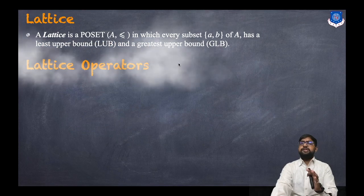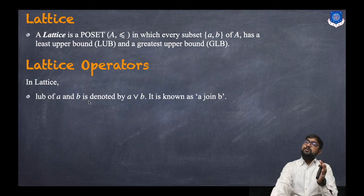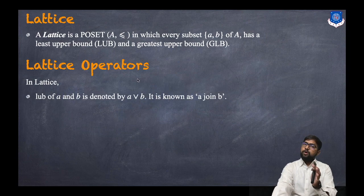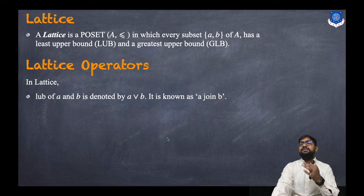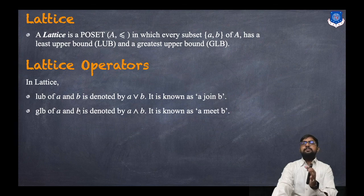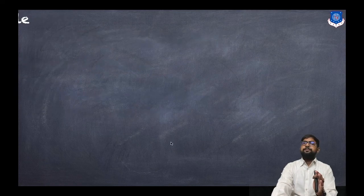Now, what are the lattice operators? In a lattice, LUB of a and b is denoted by a ∨ b and is known as 'a join b.' In the same manner, GLB of a and b is denoted by a ∧ b and is known as 'a meet b.' We already know all this, so now let us discuss an example.